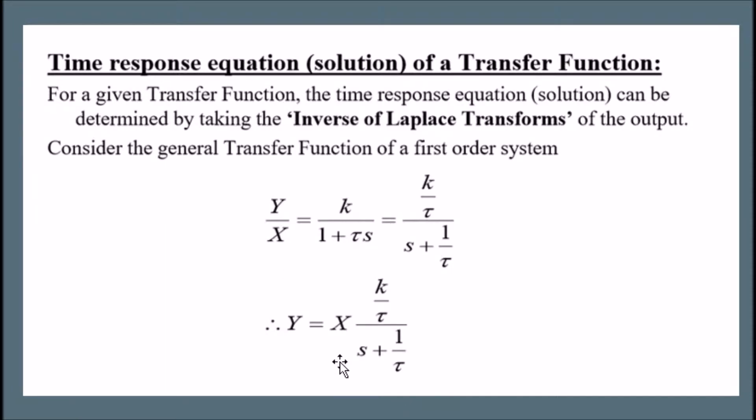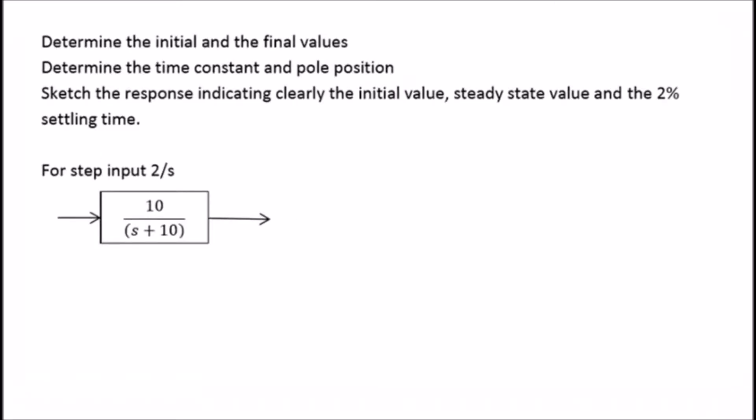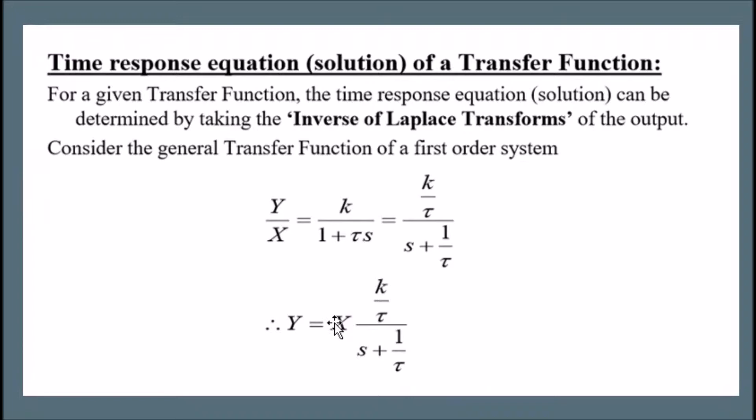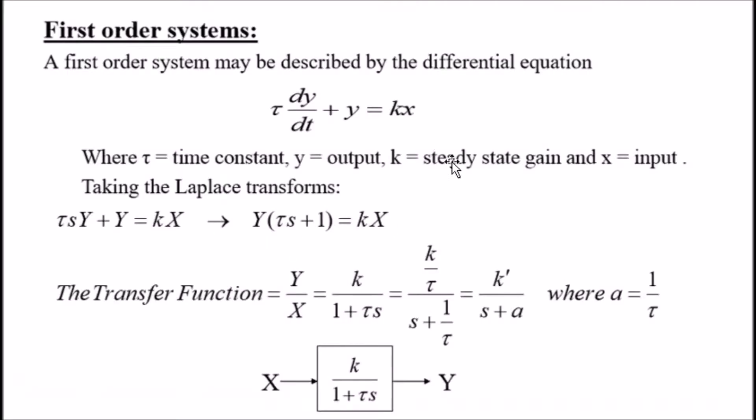Now I'd like to take you guys back to an earlier slide which defines pretty much the whole process. A first-order system may be described by a differential equation where tau is the time constant times dy over dt, which is the first derivative of y with respect to time, plus y equals a function of x, where k is the steady state gain.